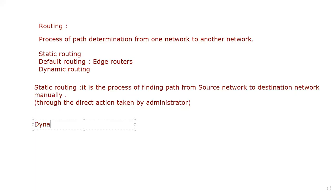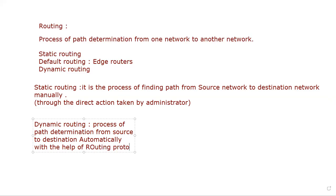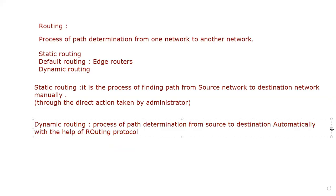What is dynamic routing? Dynamic routing is the process of path determination from source to destination automatically, with the help of routing protocols. The same path from source to destination is determined, but in static routing it is manual, while in dynamic routing it is automatic.